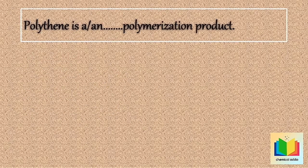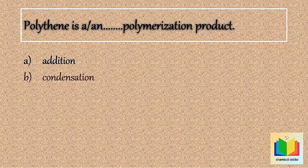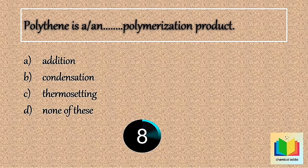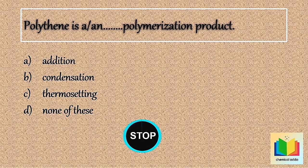Next question: Polyethylene is a or an — polymerization product. Option A: Addition. Option B: Condensation. Option C: Thermosetting. Option D: None of these. [10 seconds] So the answer is Option A: Addition.